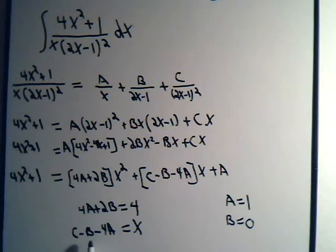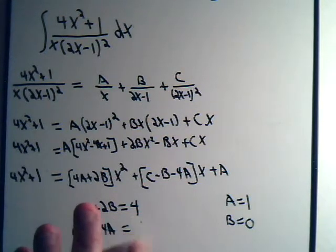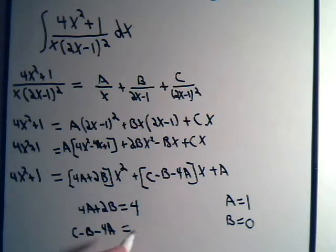So B must be 0. Now we go down to here. We have C. That's 0 minus 4. And that's not equal to x. That's equal to 0. There is no x term over here. So B is already 0. So that's gone. A is 1. So looks like C has to be equal to 4.